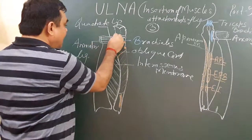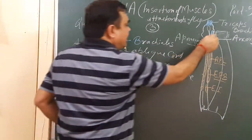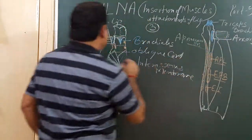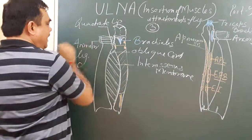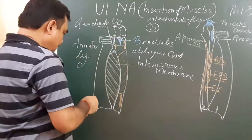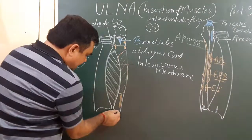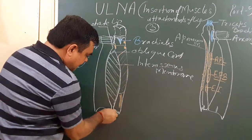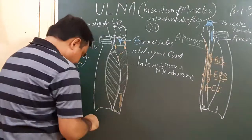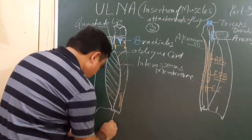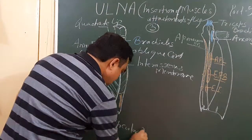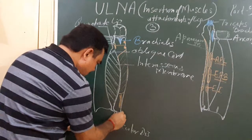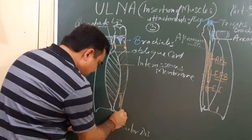Here the annular ligament is attached with the margin of the radial notch. And here is the articular disc, with some fibers at the styloid process.